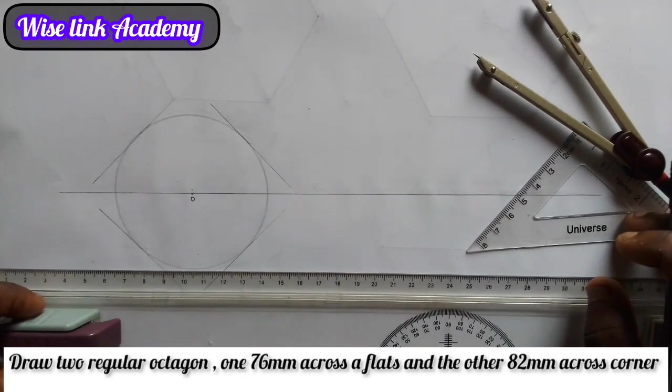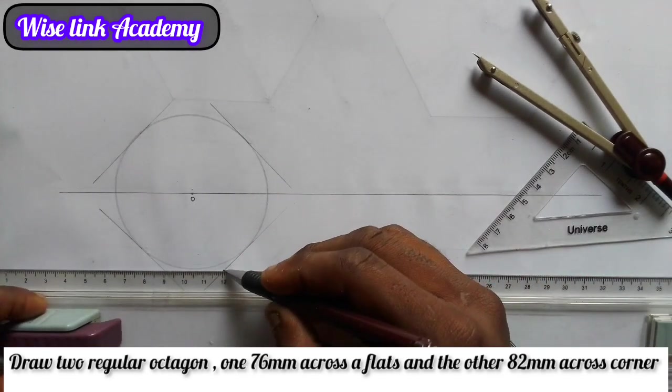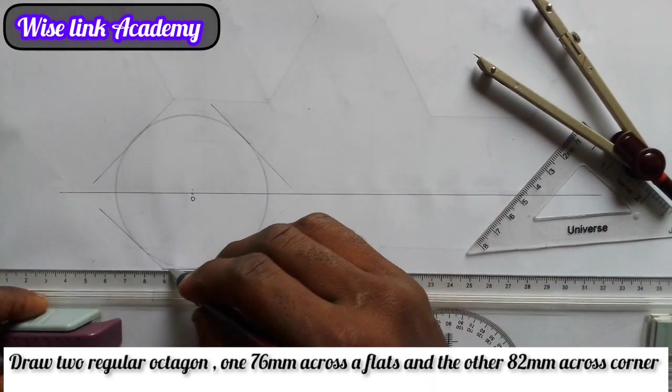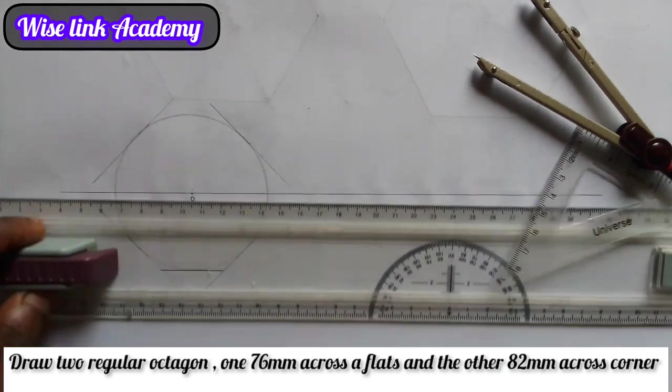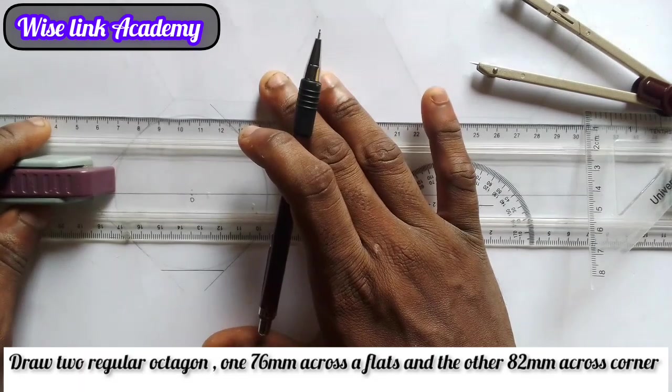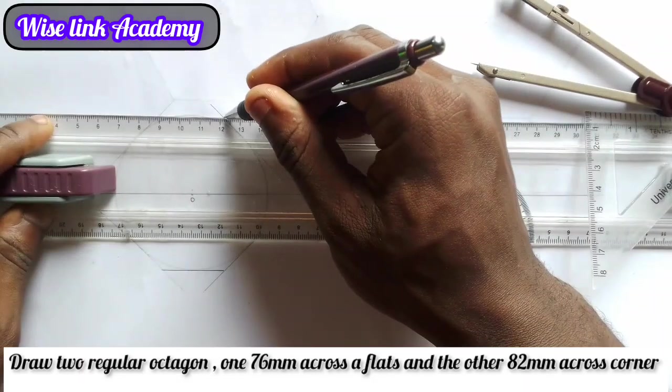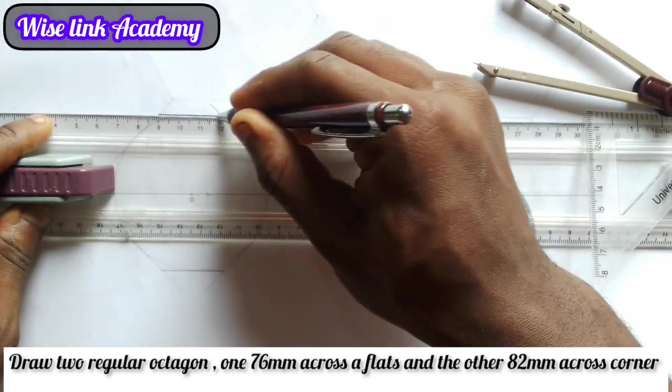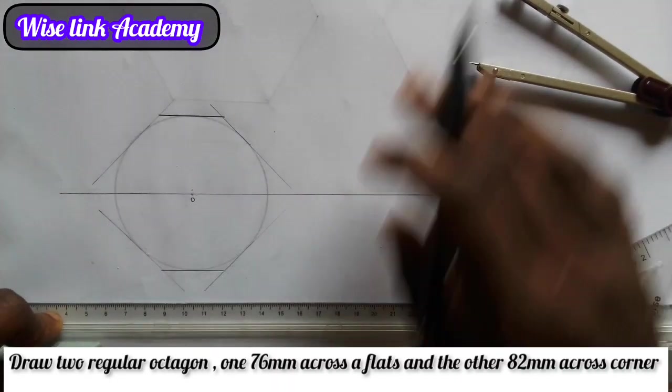So my next task now is to take this, close it up together, thicken it this way. That's my first task. Come up here to thicken this upper part, this point here to this point, thicken it. I have this.